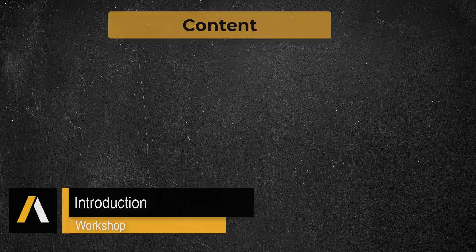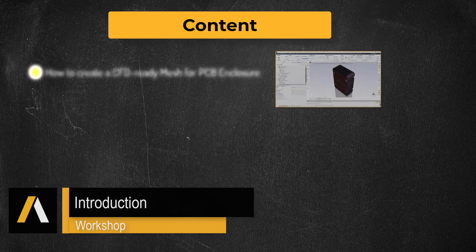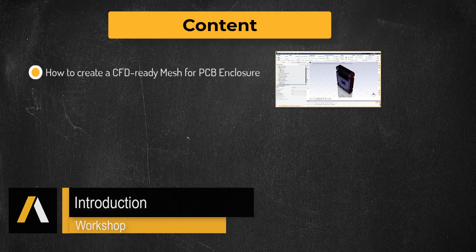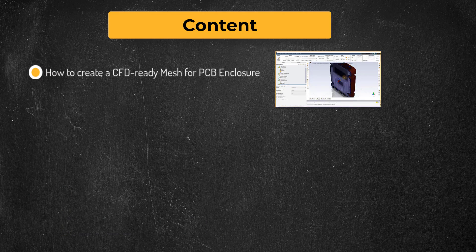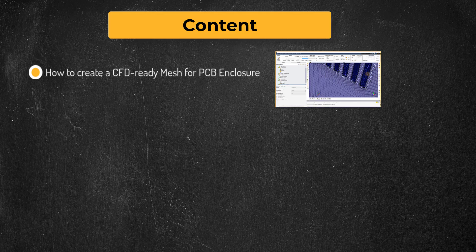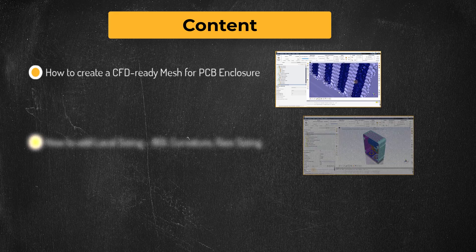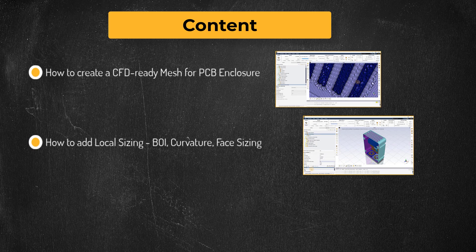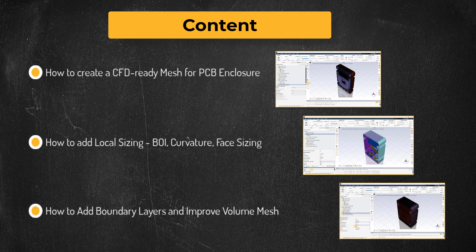Hello and welcome. In this workshop, we will demonstrate how to generate a polyhexcore volume mesh in an electronics enclosure using the watertight geometry workflow in ANSYS Fluent Meshing for a conjugate heat transfer analysis. During the workshop, we will explore how to add local size controls such as BOI, curvature and face sizing. We will also demonstrate how to add boundary layer mesh and improve the volume mesh quality. Let's get started.